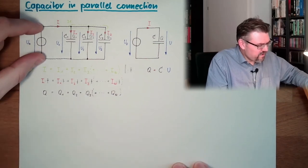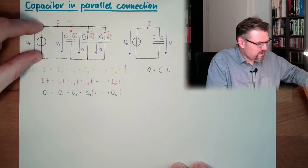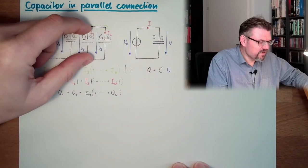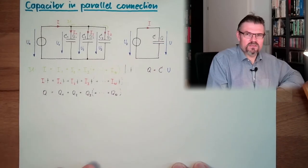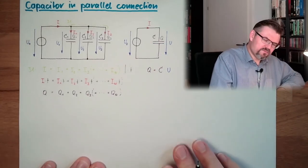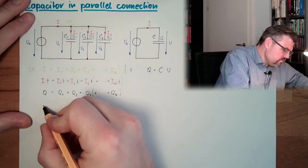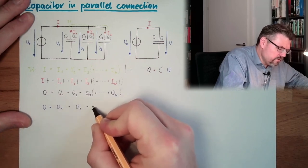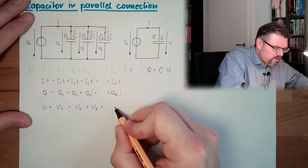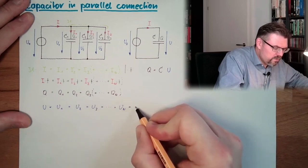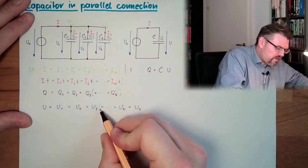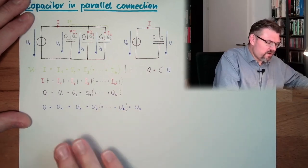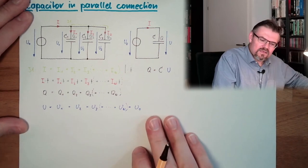This means, if the difference between here and here is that big, U0, then the difference between here and here is also U0. The difference between here and here is also U0. Here and here, here and here, here and here, everything is U0. So, this means U equals U1 equals U2 equals U3 equals whatever equals Un equals U0. This is, again, the extrapolation here. Not drawn. So everything is U0.